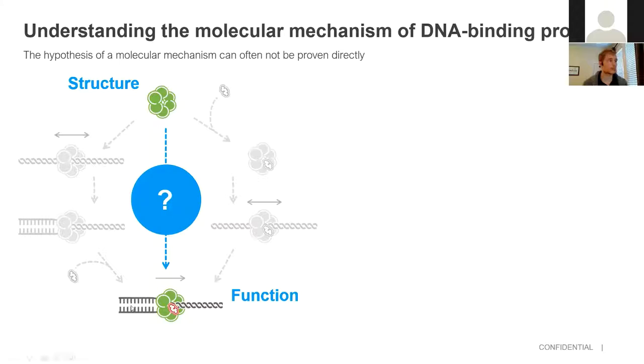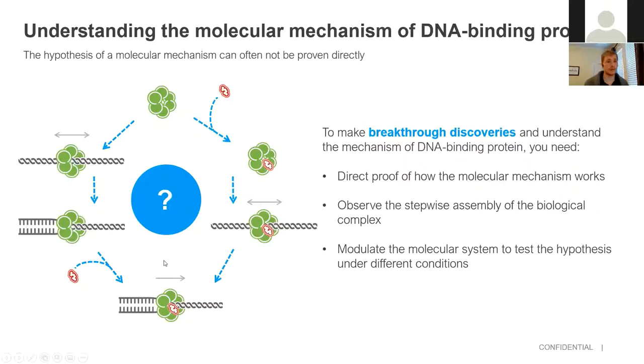But unfortunately, this wouldn't tell you a lot about the molecular mechanism involved. So we believe in order to make breakthrough discoveries and understand these underlying mechanisms, you need to essentially do three things. You need to demonstrate direct proof of how the molecular mechanism works. So does this associate with the molecule of interest, then bind DNA and then start to unwind it? Call this path A.